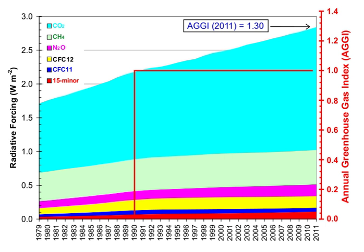Human activities since the beginning of the Industrial Revolution have produced a 45% increase in the atmospheric concentration of carbon dioxide, from 280 ppm in 1750 to 406 ppm in early 2017. This increase has occurred despite the uptake of more than half of the emissions by various natural sinks involved in the carbon cycle.